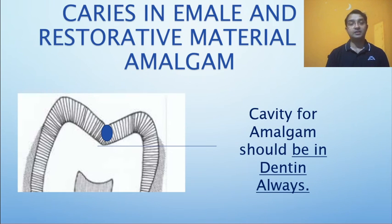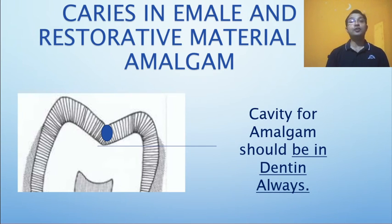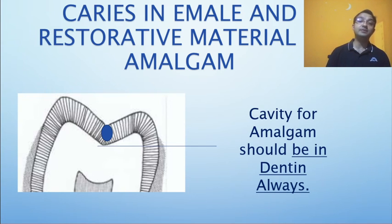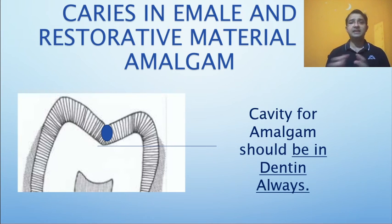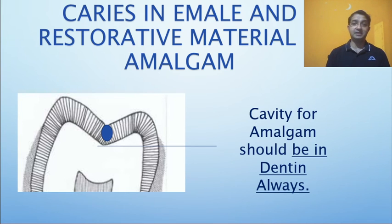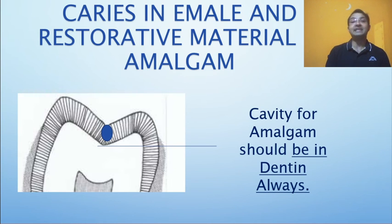The second point regarding initial depth is the type of restorative material. For amalgam, if decay is restricted to enamel, the cavity preparation still has to go into dentine — specifically 0.2 mm below the dentino-enamel junction. This is because amalgam is a brittle material and enamel is a brittle material. If you don't take the support of dentine, there is a high chance of fracture of the tooth, the margin, or the restorative material. When the floor is on dentine, the forces are absorbed by the dentine, helping both the tooth and the amalgam.